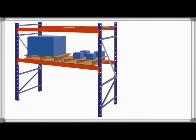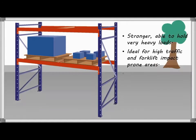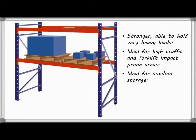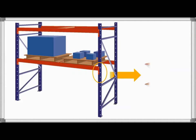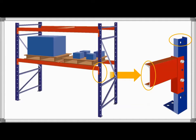Structural steel is hot rolled. Its components are then welded together. This process gives it unique attributes that allow it to hold very heavy loads. This strength also allows it to better withstand forklift impact and harsh environments such as outdoor storage and freezer storage. Structural steel racking is formed with an open back and is therefore easy to keep debris free, making it ideal for food storage applications.